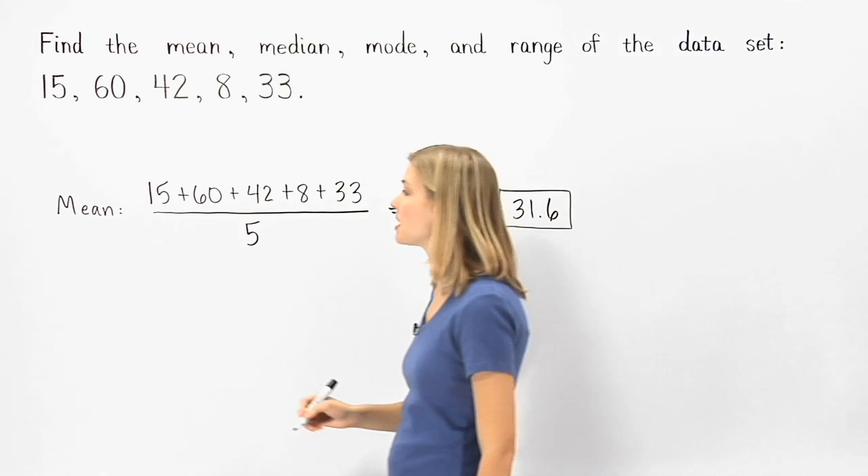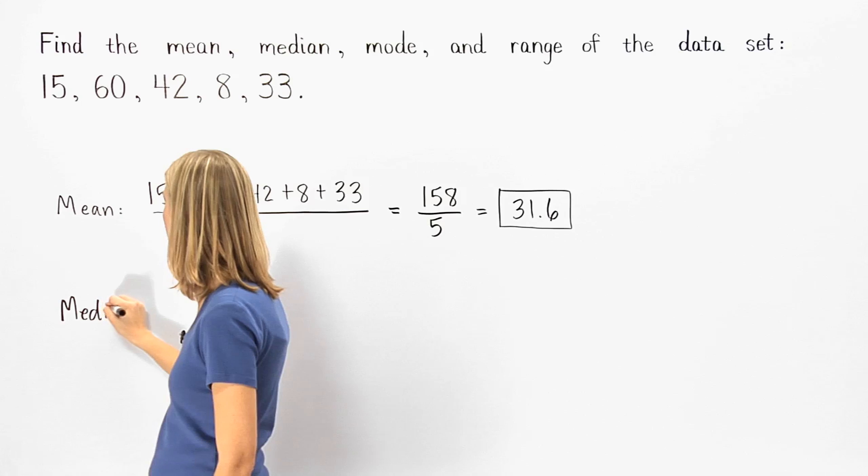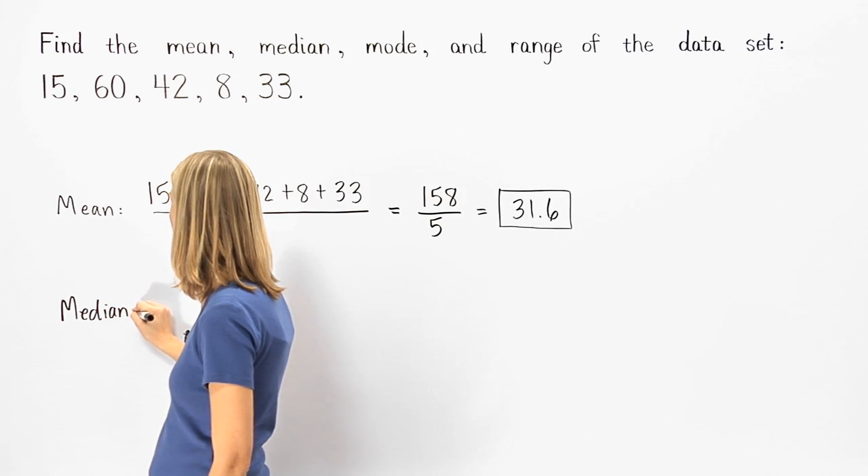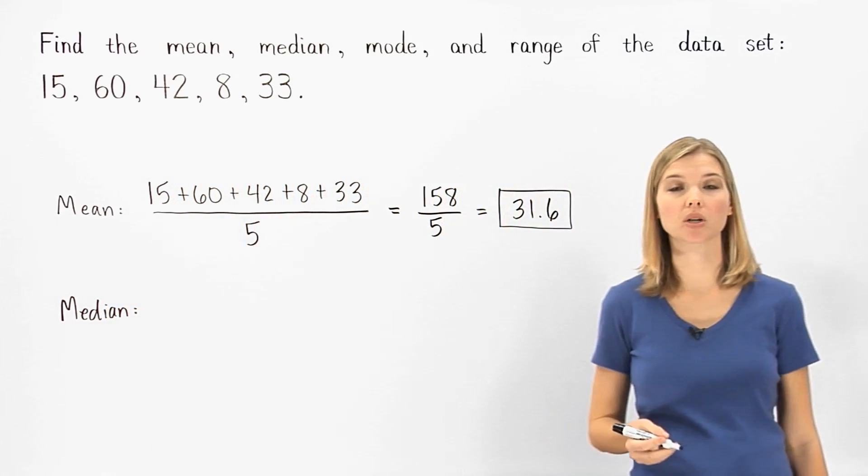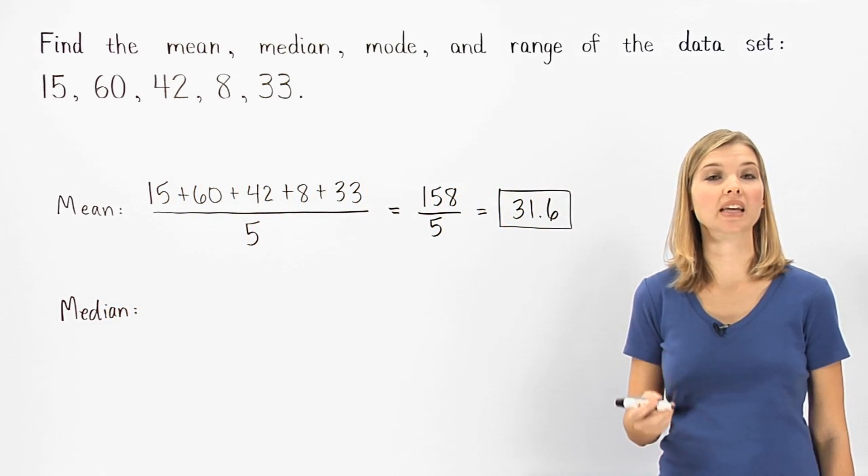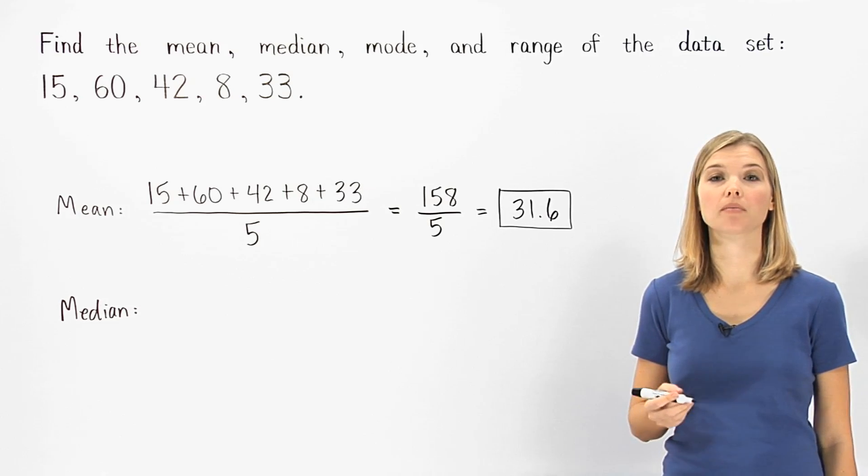Next, we're asked to find the median of the data set. Remember that the median of a data set is the middle number when the numbers are in order from least to greatest. So let's write the numbers in our data set in order from least to greatest.